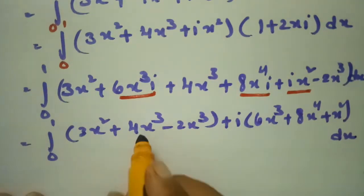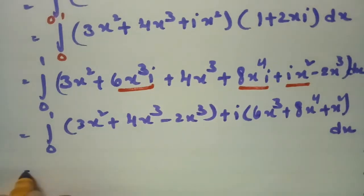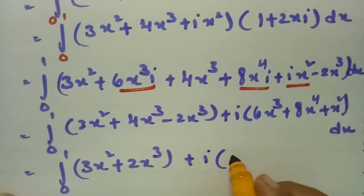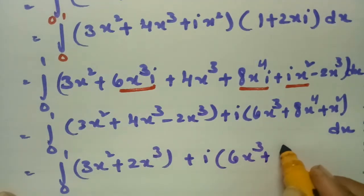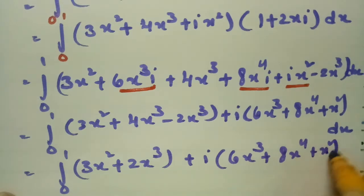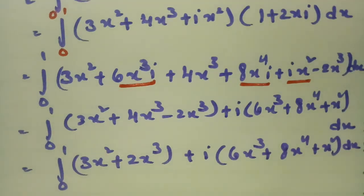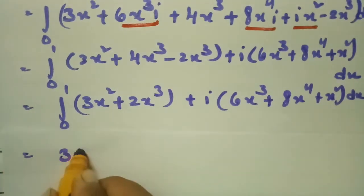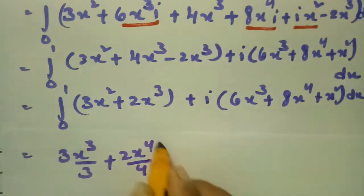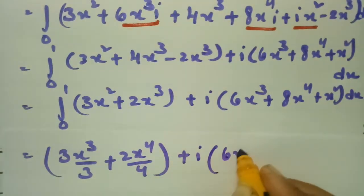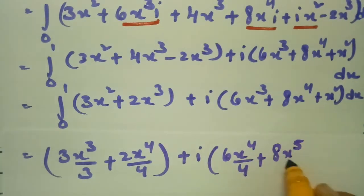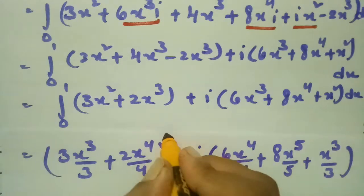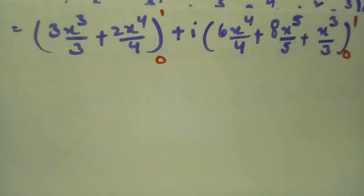Now integrating with respect to x from 0 to 1: the real part integrates to 3x³/3 + 2x⁴/4 − ... and the imaginary part gives i times (x⁴/4 + 8x⁵/5 + x³/3), all evaluated between limits 0 to 1.